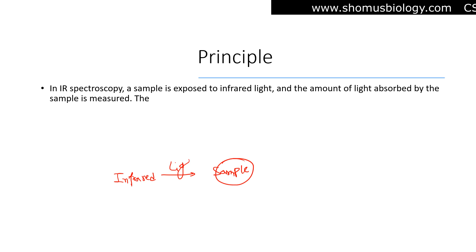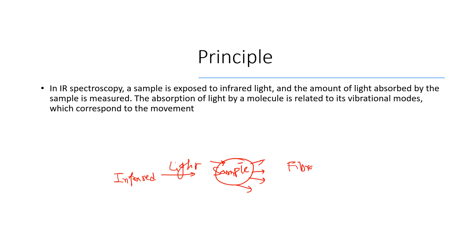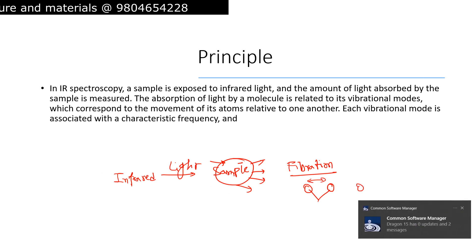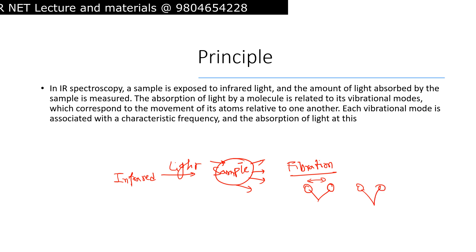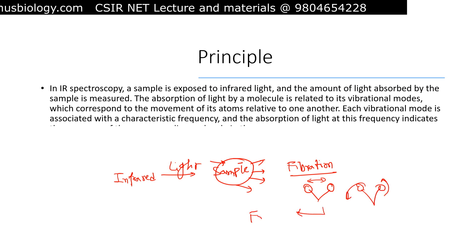The absorption of light by a molecule is related to its vibrational modes which correspond to the movement of its atoms relative to one another. Each vibrational mode is associated with a characteristic frequency and the absorption of light at this frequency indicates the presence of the corresponding molecule in the sample.